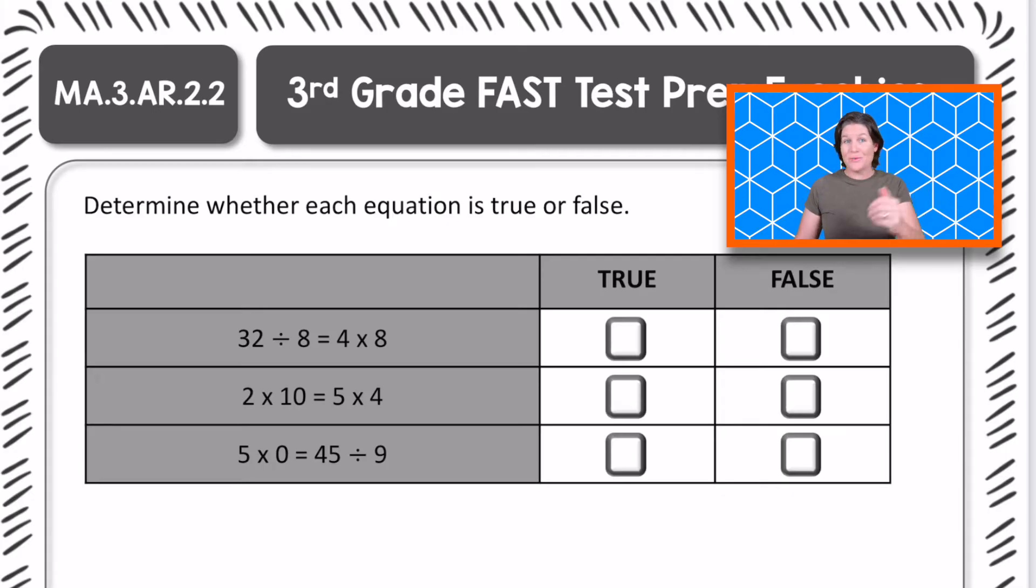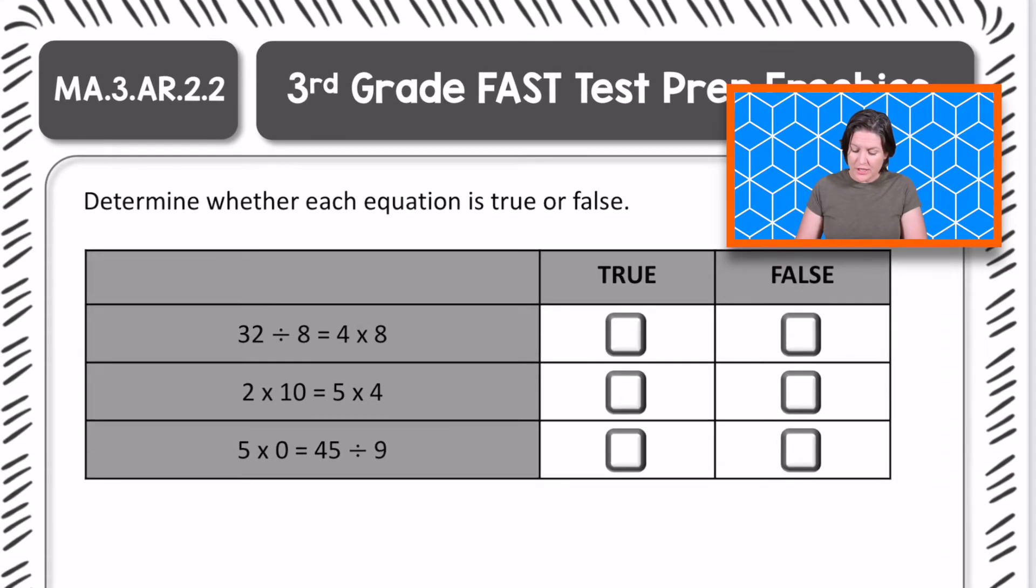Alright third grade, welcome back. Let's see how you did. This problem is a matching item question with true and false. It says determine whether each equation, that means we have equal signs which we notice right here, is true or false. False means not true.